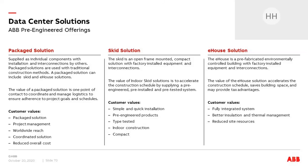An e-house is very similar, but the difference is it's an outdoor switchgear building. We put all the critical power equipment in — medium voltage switchgear, low voltage switchgear, UPS. It's a fully integrated system where we do all the installation and commissioning, and it arrives on site ready to go. The advantage of an e-house is it allows the construction cycle to be a parallel path rather than a series, and it also offers some tax advantages.